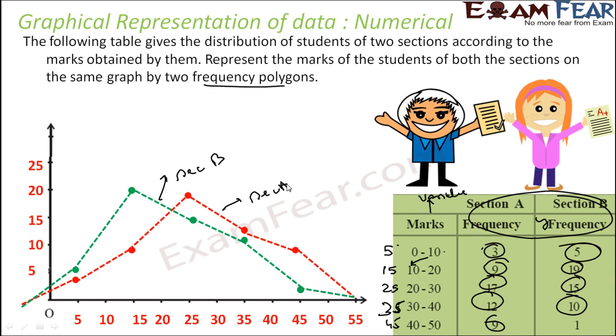So I have represented the marks of both sections using frequency polygons — section A and section B.